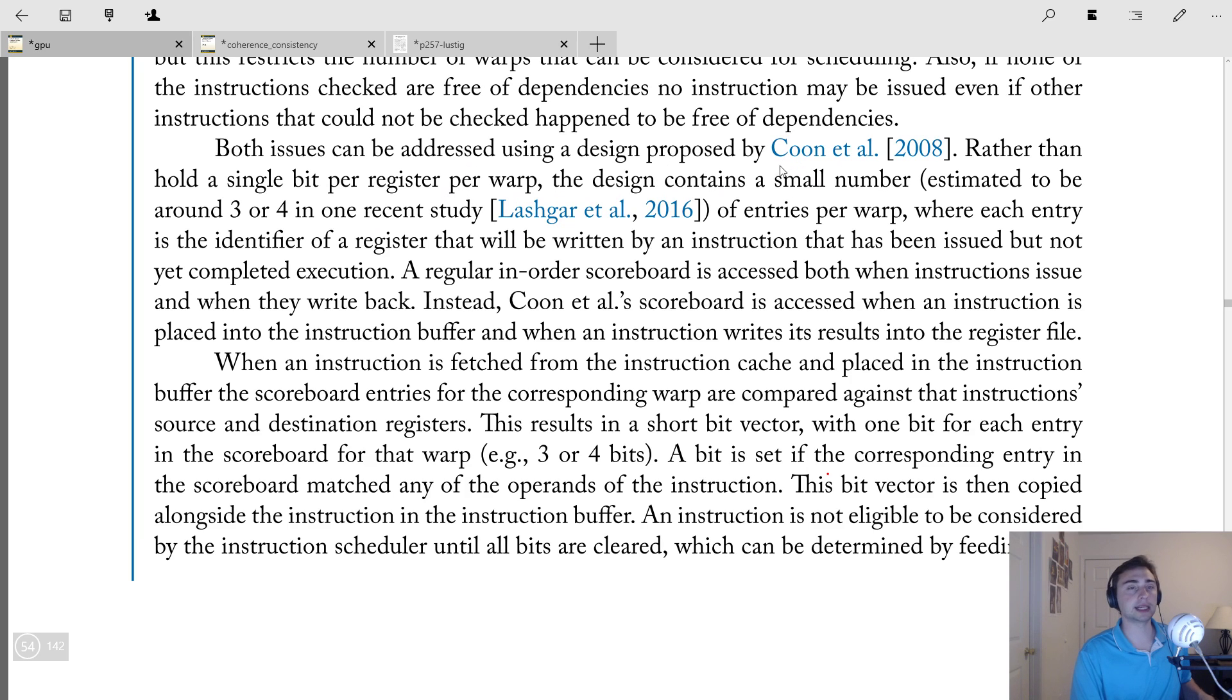But both of these issues, the fact that the large amount of state and things like read ports, they can be addressed using a design from 2008, which basically is rather than hold a single bit per register per warp, the design contains a small number estimated to be three or four by 2016 study of entries per warp, where each entry is the identifier of a register that will be written by an instruction that has been issued, but not yet completed execution. So these are the ones that are outstanding. So a regular in order scoreboard is accessed both when the instruction issue and when they write back, but instead this design from 2008, the scoreboard is accessed when instruction is placed into the instruction buffer. So when it goes into the instruction buffer, it checks, okay, where are my dependencies? And it'll keep it there in the instruction buffer.